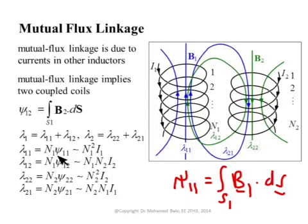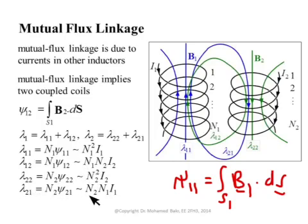Remember that Ψ12 is proportional to the magnetic field of the second coil, and that field is proportional to the number of turns. So Lambda12 is really proportional to the product of N1, N2, and the current I2, because it results from the magnetic field B2. Similarly, Lambda22 = N2 × Ψ22, where Ψ22 is the integral over the cross section of the second coil of B2·ds, giving a factor of N2 squared. The same applies to Lambda21.